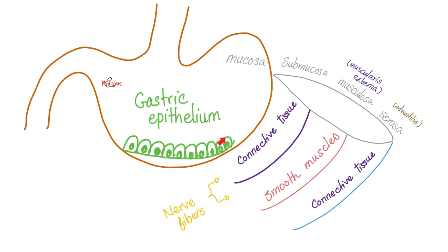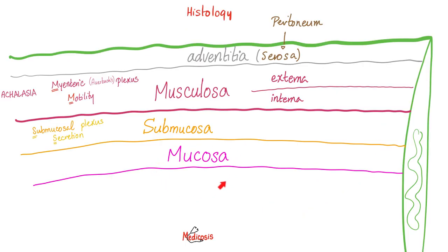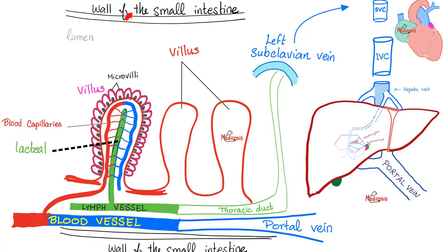The wall of the gut is made of mucosa, submucosa, musculosa, and serosa. Absorption happens in the inner layer — the mucosa — which is closer to the cavity or lumen of your gut. Here is the wall of the small intestine. The lumen is the cavity; the mucosa is the inner layer lining it. The mucosa contains villi — each villus is made of teeny tiny microvilli to increase surface area. Here are the capillary blood vessels; here is the lacteal, which is the lymph vessel. Water-soluble nutrients go to blood capillaries; fat-soluble nutrients go to lacteals.